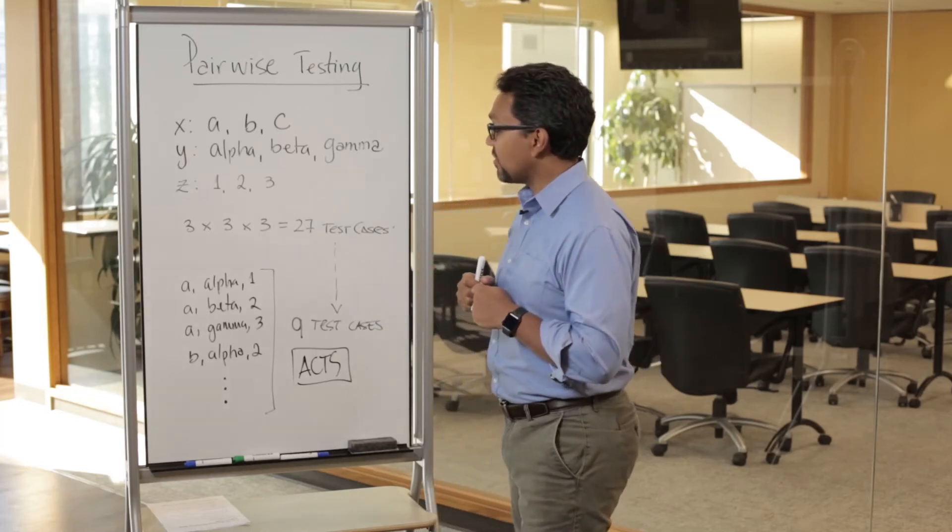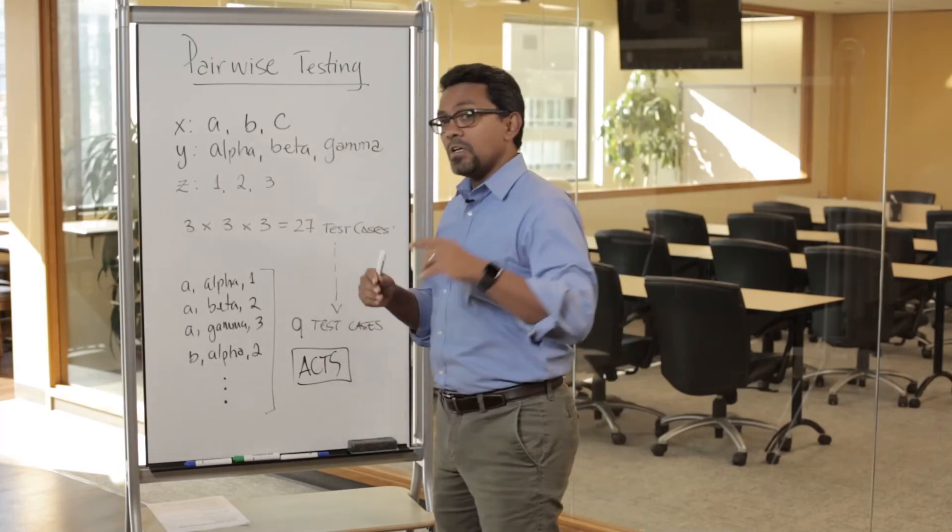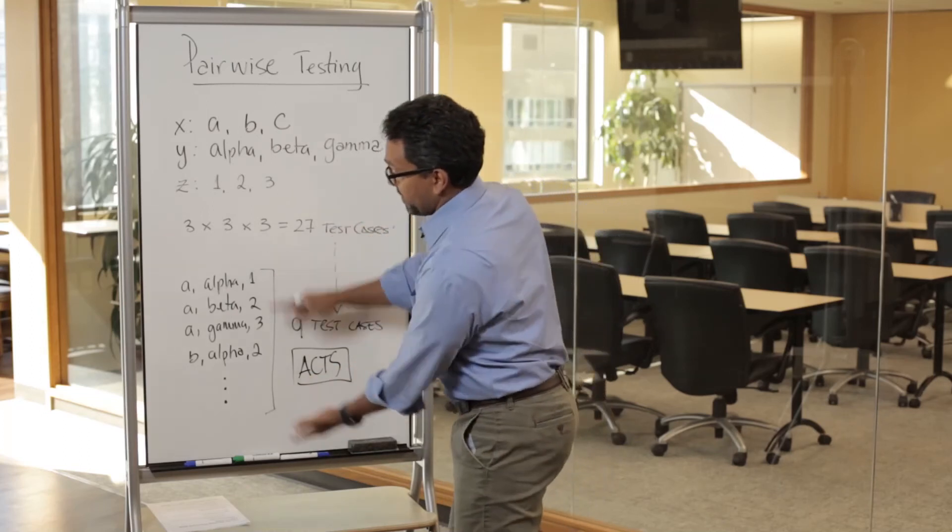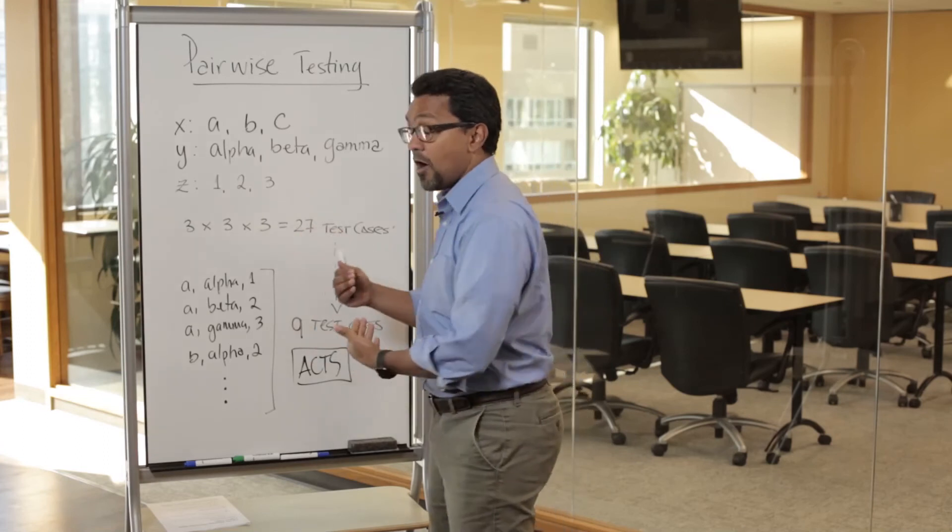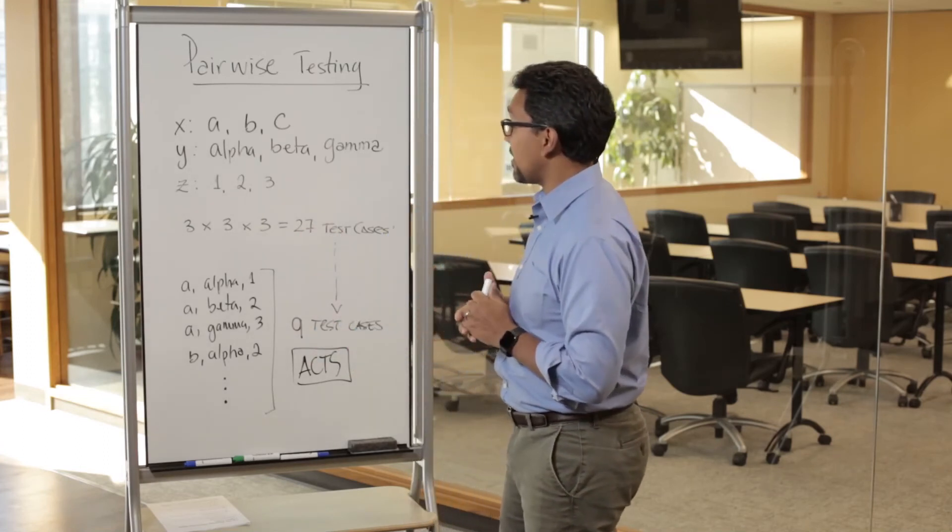So you can either tell the system—in this case the tool—say, this is one triplet that I want to have as part of the output, and they can do that for you. Or you can essentially take the output and add those additional test cases that you like to have.